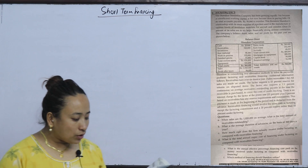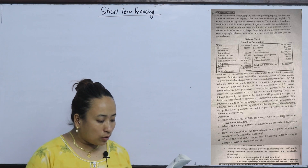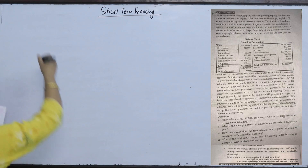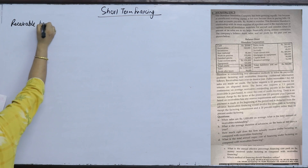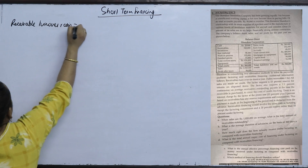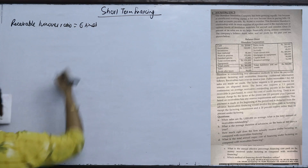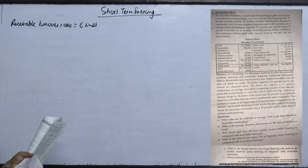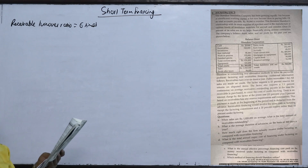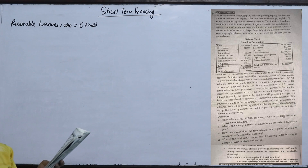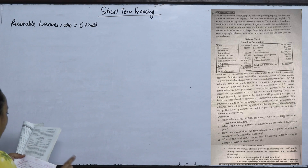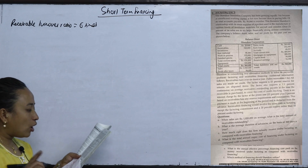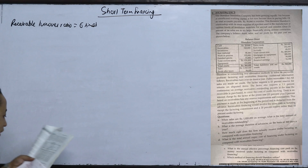Additional information follows. Receivable turnover is 6 times a year. All sales are made on credit. If sales are 19,20,000, then all are made on credit. The factor requires a 15% reserve for returns and disputes.